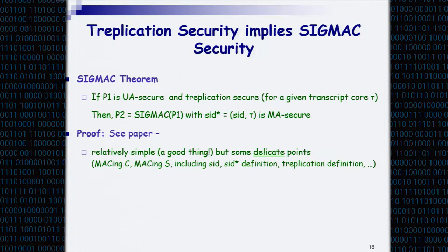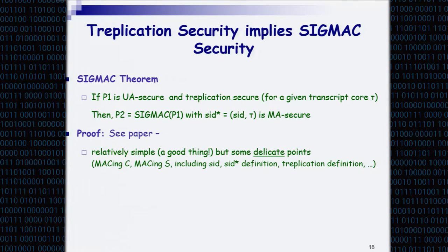The theorem that can be proven: if P1 is UA secure and replication secure for a given transcript core τ, then P2 — which takes SIGMAC applied to P1, with SID* including the original session identity (basically the nonces of the parties) and the transcript core τ — that protocol is MA secure. The proof is relatively simple but not completely trivial, because it has to go through all these subtleties, but there is nothing too deep going on.